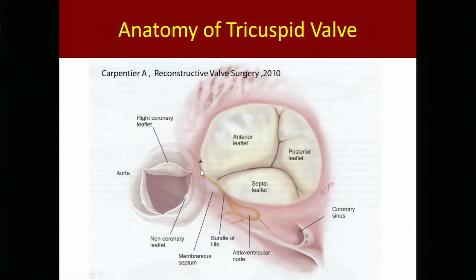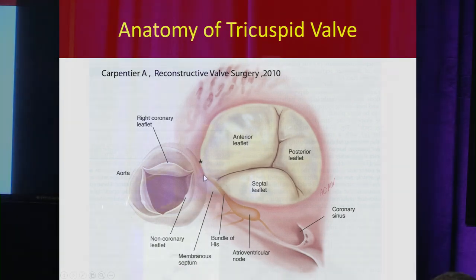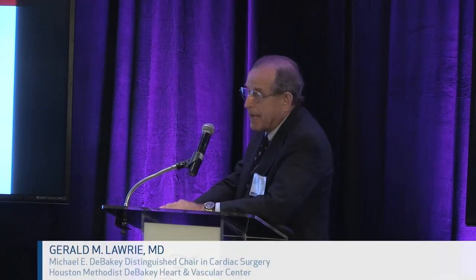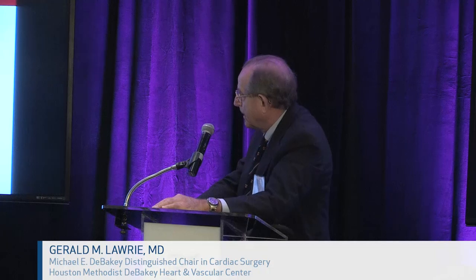The leaflets are not monoplanar. The anterior leaflet is the highest, and the posterior leaflet spirals down to the septal. By the time you get back down there, there's about a three to four millimeter step up to get back to the anterior leaflet. So when sewing on a ring, there's an actual little step you have to follow if you're using a full ring.